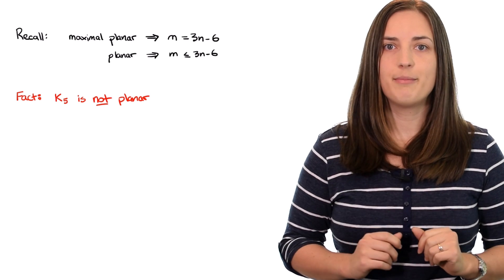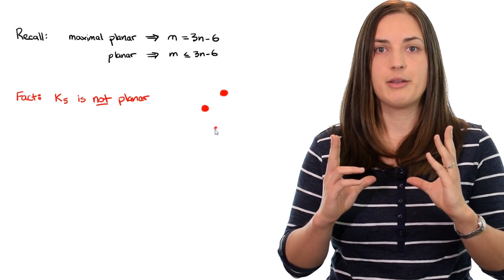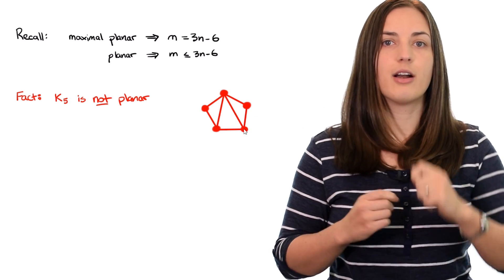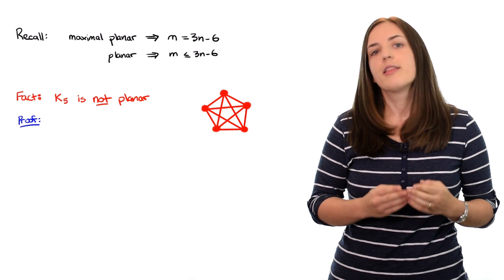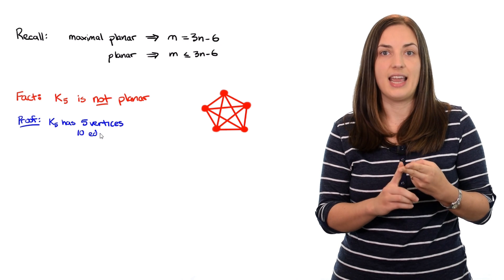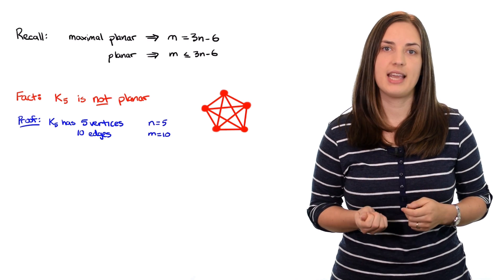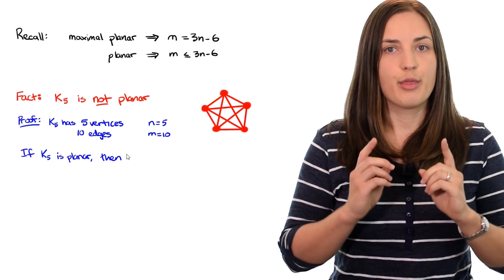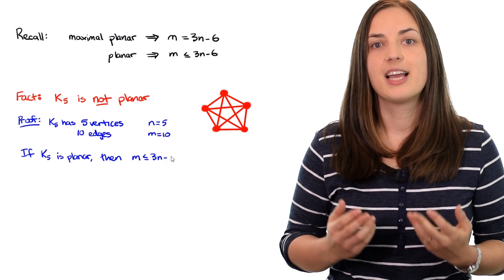K5 is not planar. K5, being the complete graph on five vertices, has five vertices and every pair of vertices is connected by an edge. In K5 it has five vertices and ten edges, so n equals 5 and m equals 10. Now if K5 was planar then the number of edges m must be less than or equal to three times n minus six.